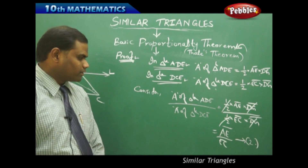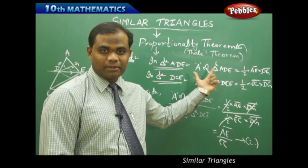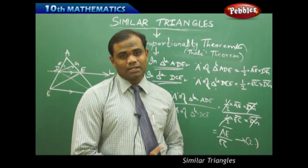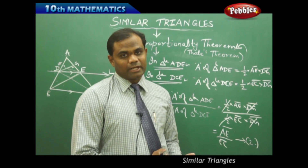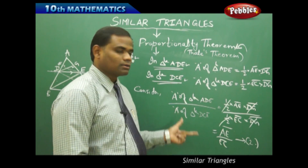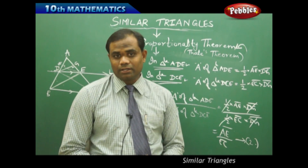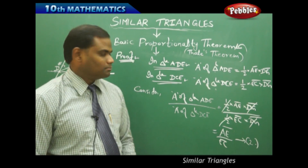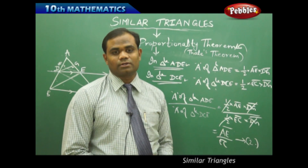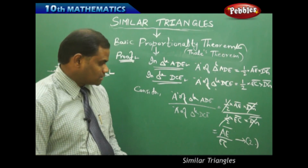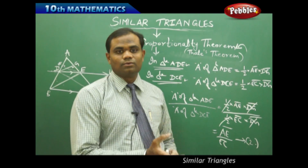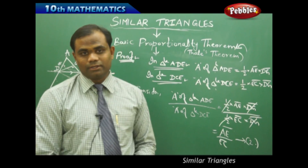I now have equation 1 and equation 2. If the left-hand sides of equations 1 and 2 are equal, then by the transitive property the right-hand sides are also equal. Let's show that the left-hand sides are indeed equal by examining the areas of the triangles.